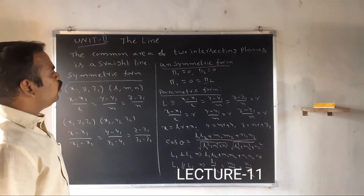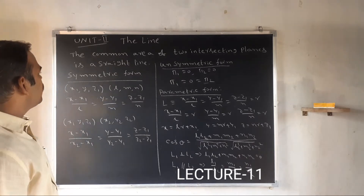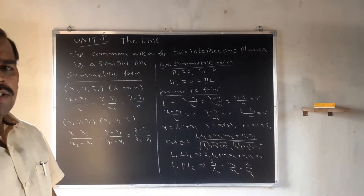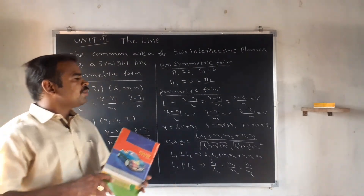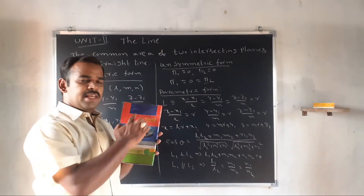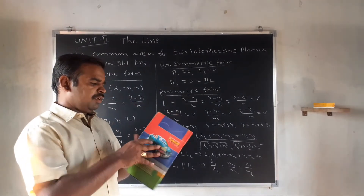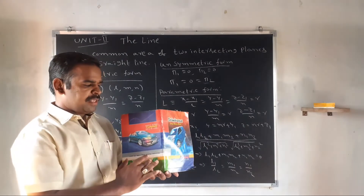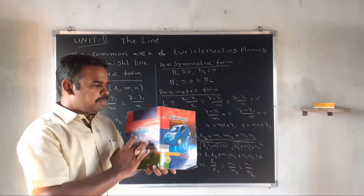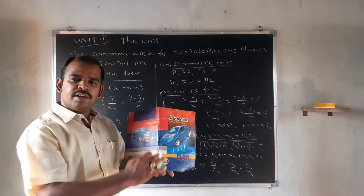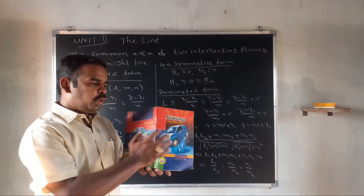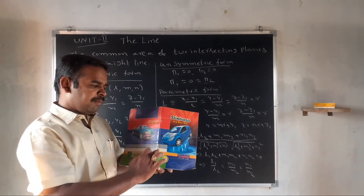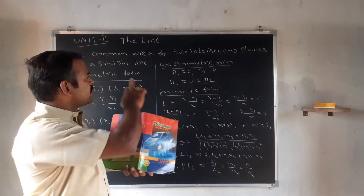The common area of two intersecting planes is a straight line. Suppose this is a plane — we have two planes here. Two planes are intersecting in this line. The common area of two intersecting planes is a straight line; this is the common area of the intersecting plane.